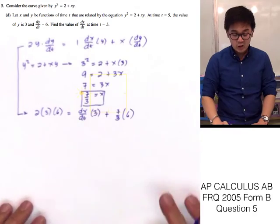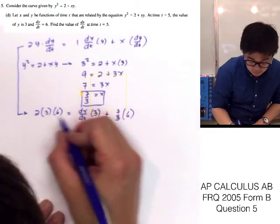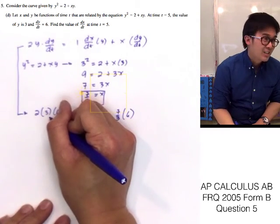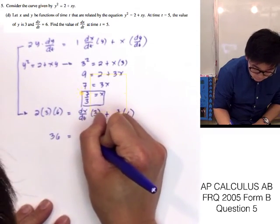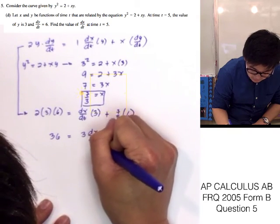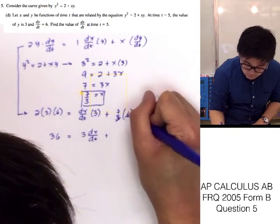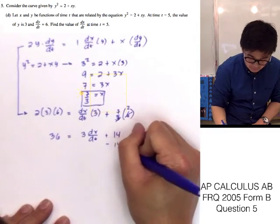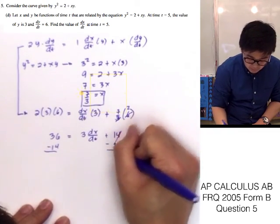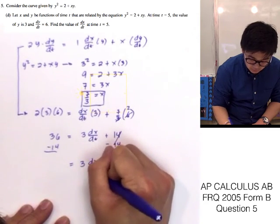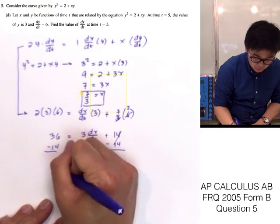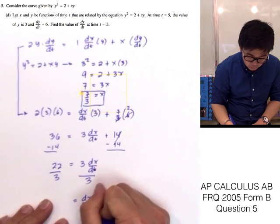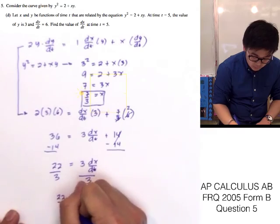Simplifying: 7/3 times 6 equals 14, so we have 36 equals 3 dx/dt plus 14. Subtracting 14 from both sides gives 22 equals 3 dx/dt. Dividing both sides by 3, therefore dx/dt equals 22 over 3.